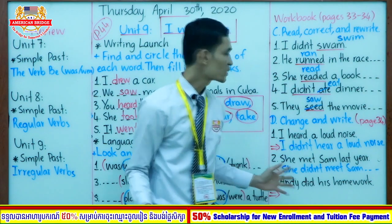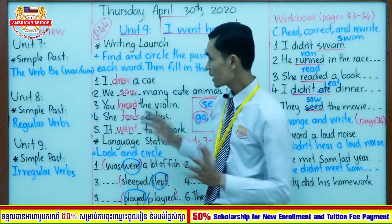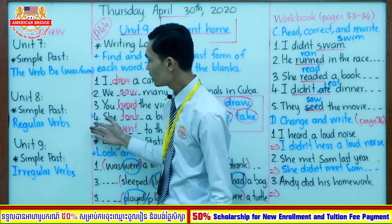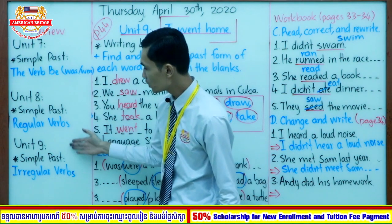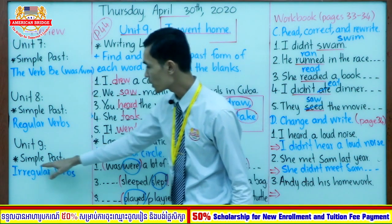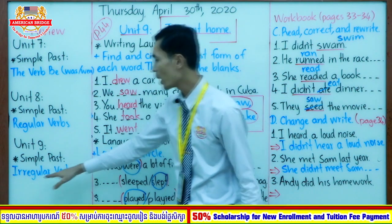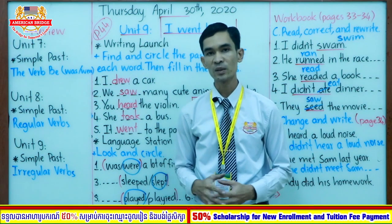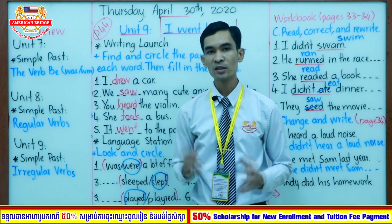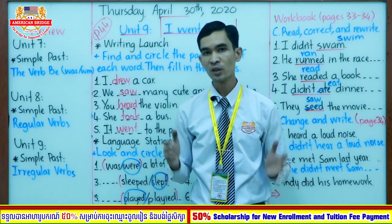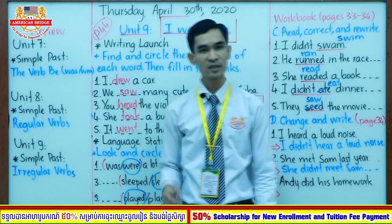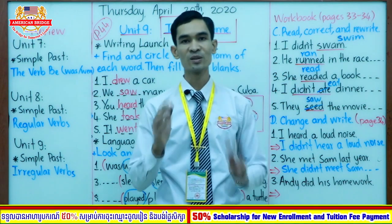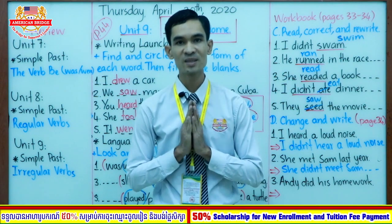That's all for the lesson. Just to review: in unit 9 we focus on simple past irregular verbs — affirmative and negative. Try to remember them and use them in your writing and speaking. That's it for today. See you in the next video. Goodbye, class!